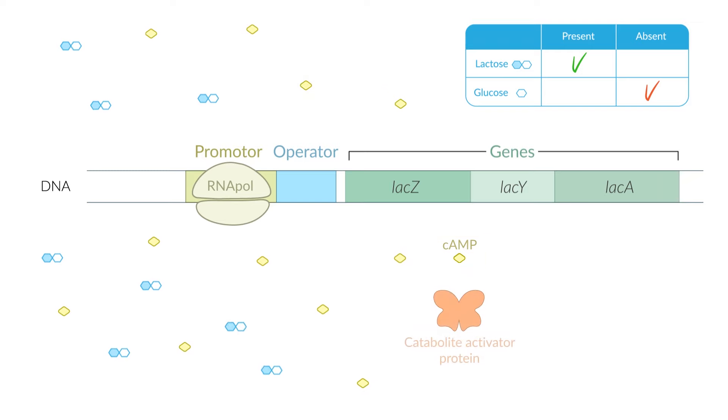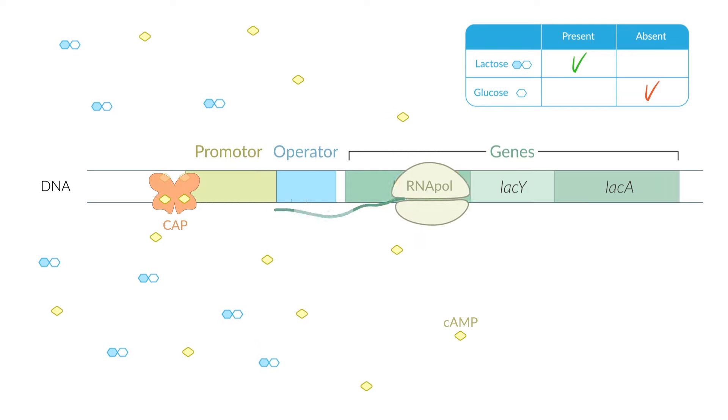cAMP then binds to the catabolite activator protein, in short, CAP. This cAMP-CAP complex forms a dimer that binds to the DNA close to the LAC promoter, thereby increasing RNA polymerase activity.